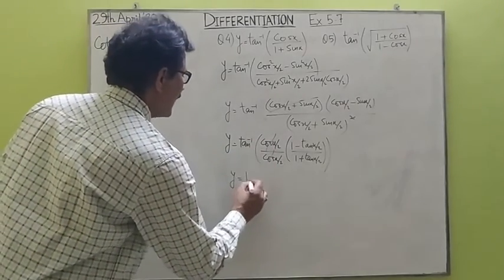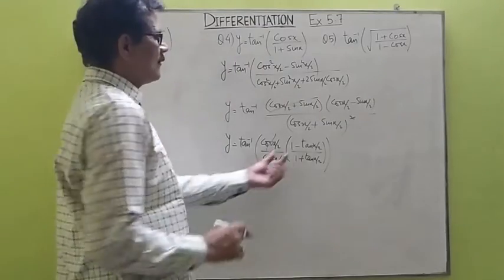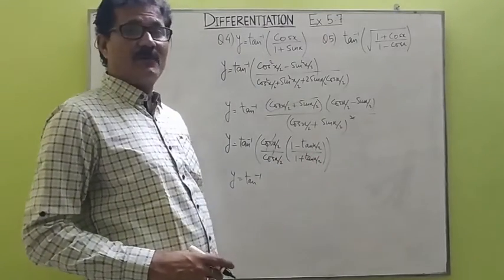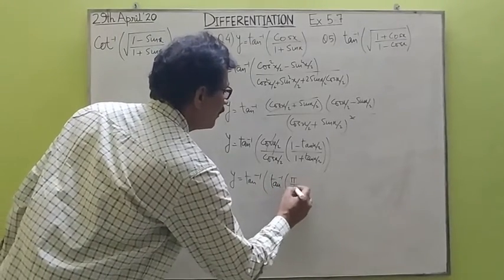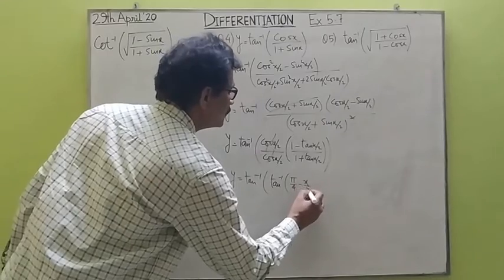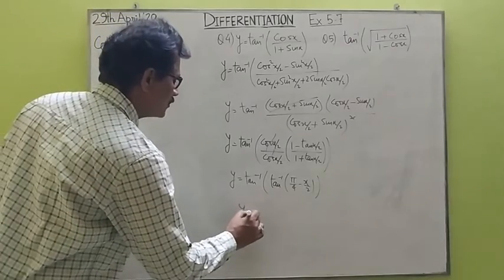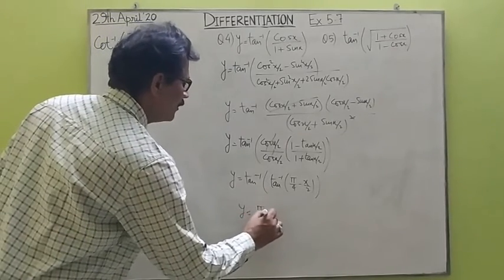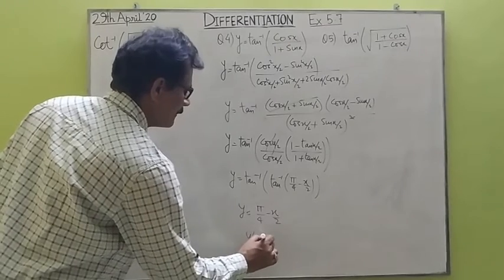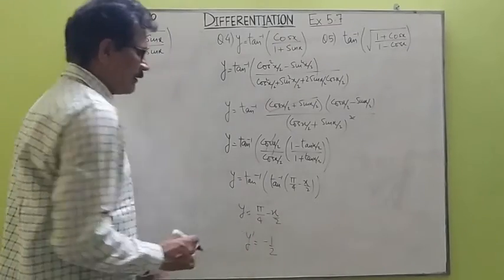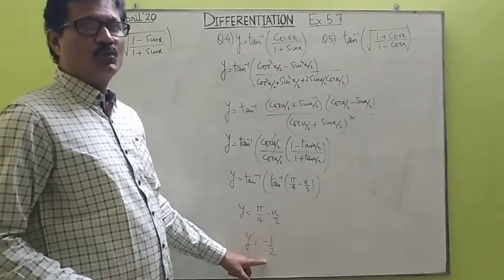This reduces to tan inverse of the formula: 1 minus tan(x/2) upon 1 plus tan(x/2) is the formula of tan(π/4 minus x/2). When we simplify, y equals π/4 minus x/2. So the derivative of this function is minus 1/2, because π/4 is constant so its derivative is 0, and the derivative of minus x/2 is minus 1/2.